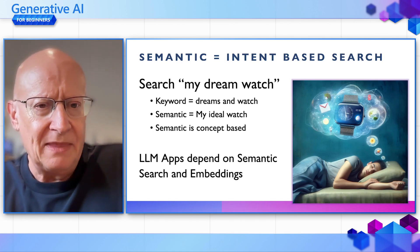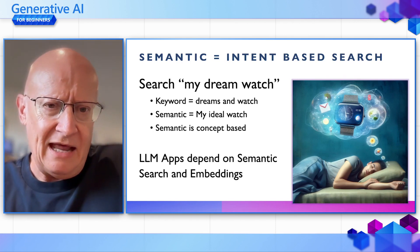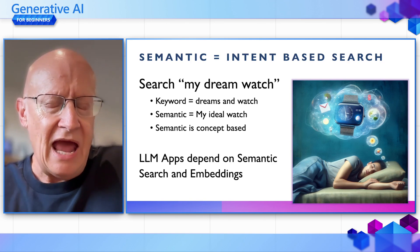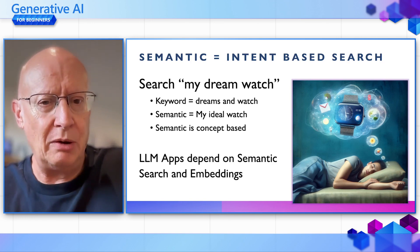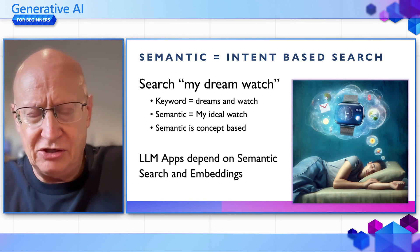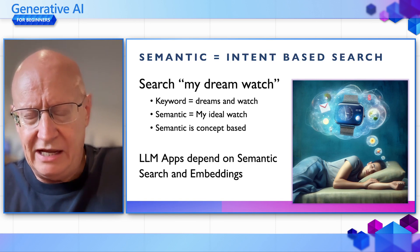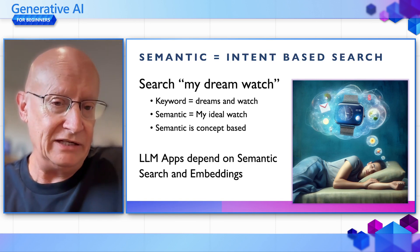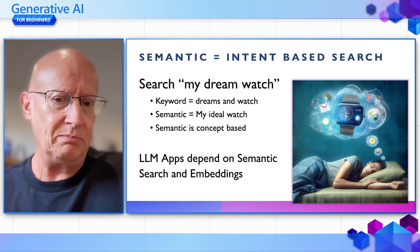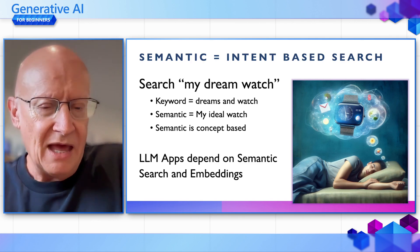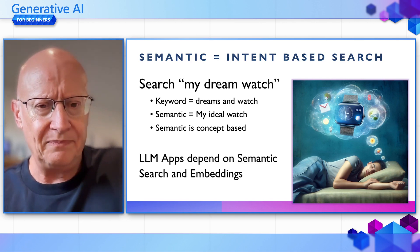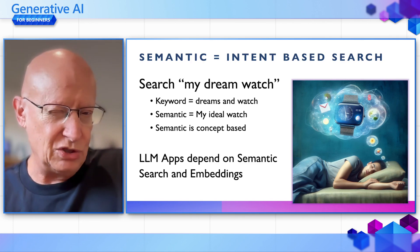Take this example: if you search for 'my dream watch', a keyword search would return results about dreams and watches — which is probably not what you were looking for. With semantic search, it would boil down to the concept of 'my ideal watch', and you'd find things about ideal watches. So the key thing about semantic search is around intent or concept, as opposed to keyword search which would just find 'dreams' and 'watches'.